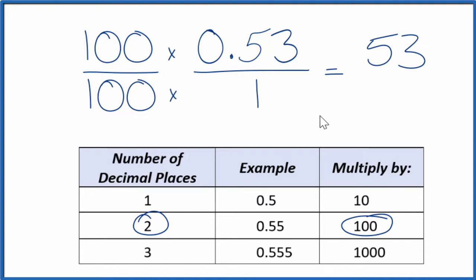So 100 times 1, that equals 100. And there's our fraction, 53 over 100. So the decimal 0.53, that equals 53 over 100.